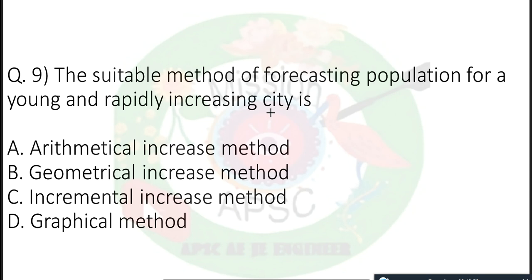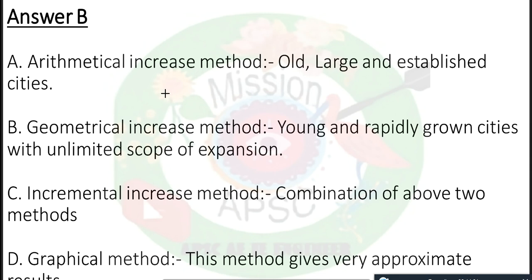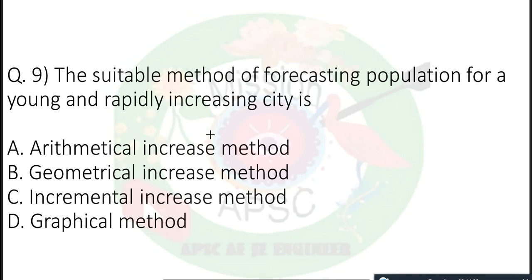Next important question: The suitable method of forecasting population for a young and rapidly increasing city is? The incremental increase method is a combination of arithmetic and geometric methods. The graphical method gives approximate results. For a young and rapidly increasing city, the geometrical increase method is used. For a large city, the arithmetic increase method is used. The correct answer is geometrical increase method.